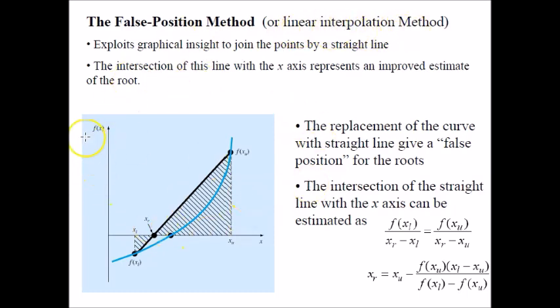For this method, imagine you have a function here, you have fx and you have x here. For this false position method, since it is a bracketing method, you need to have two initial guesses of x which brackets your root. So you need your xl and your xu.